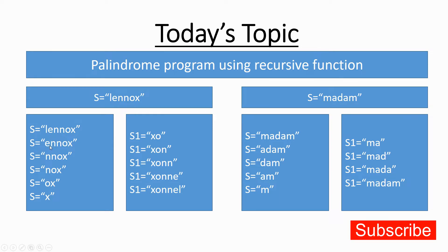This time we slice the first character and pass the rest — that is 'e', 'n', 'o', 'x'. We check again whether the length of the string is one. If not, we give a call to the same function, slicing the first character each time. So 'l' gets sliced, then 'e', then 'n', then 'o', and then 'x'. Once we reach a string of length one, the condition becomes false and the recursive function starts returning.